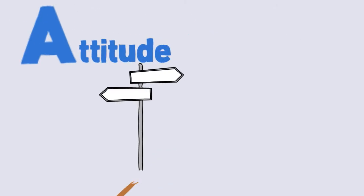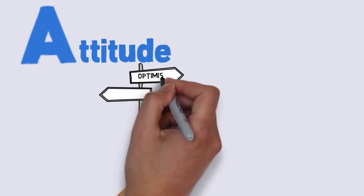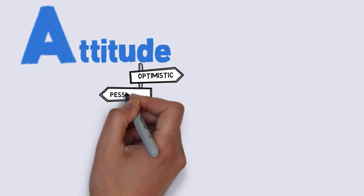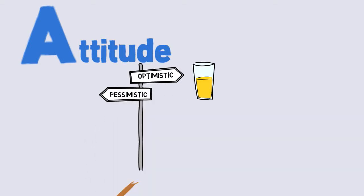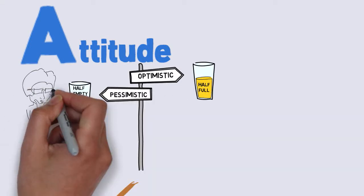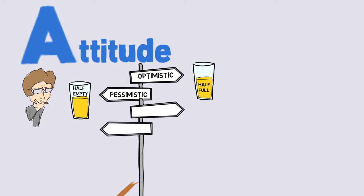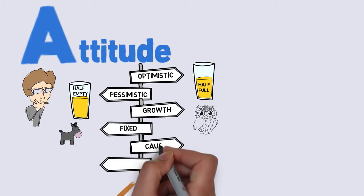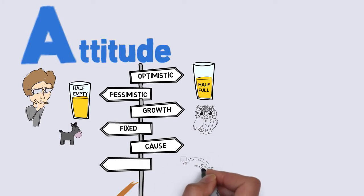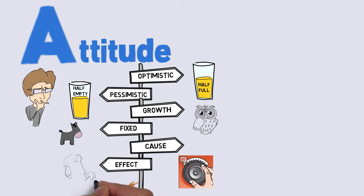Our attitude determines how we approach the path we achieve. It's important to mention here that you choose your own attitude. You can be optimistic or pessimistic. You can be growth-minded or fixed-minded. You can be a cause for your life, or you can choose to be at the effect of others and the environment. Attitude is a choice.